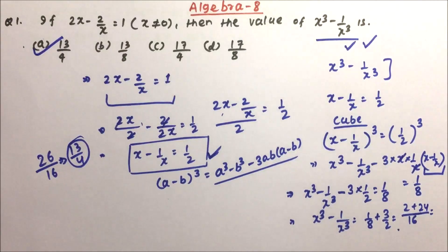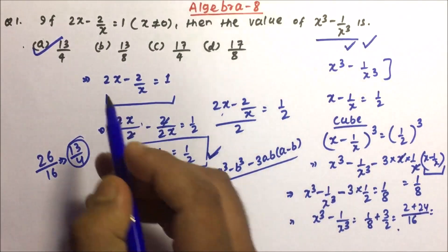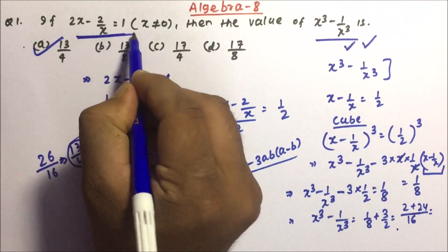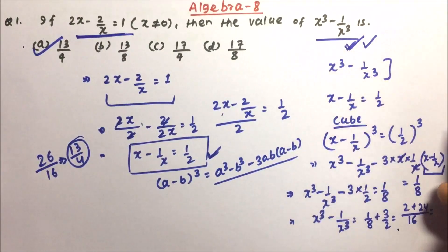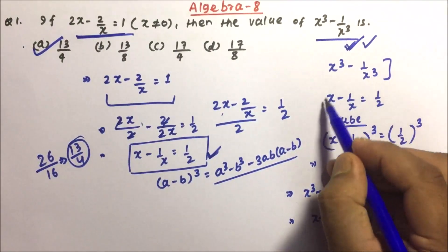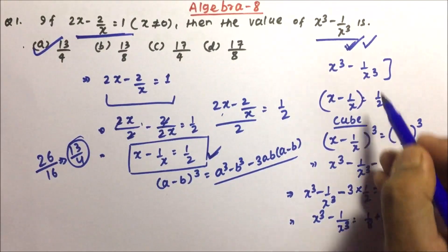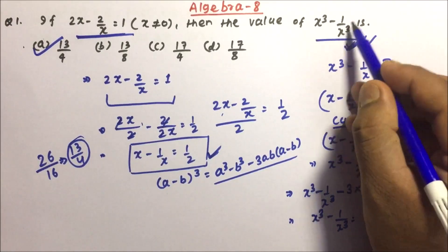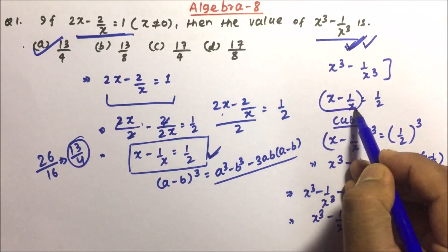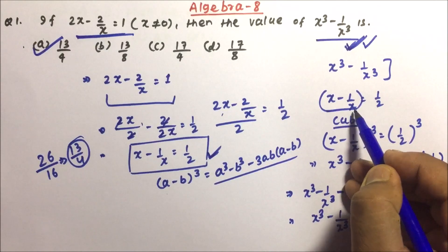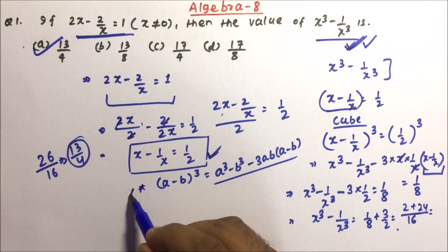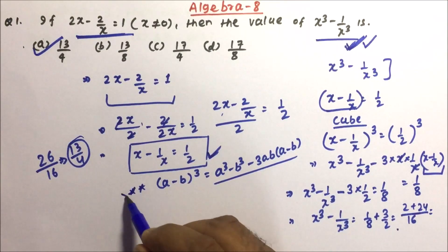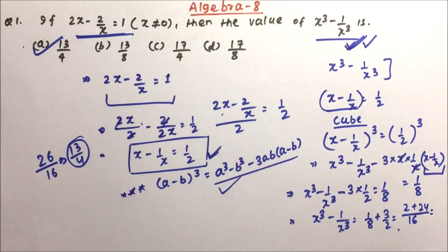So option A will be the correct answer for question number one. Basically what we have to do is convert the given expression into the format x minus 1 by x, and once you do that, calculate the cube by applying the algebraic identity to get the answer.